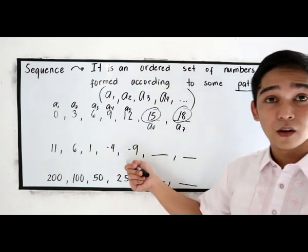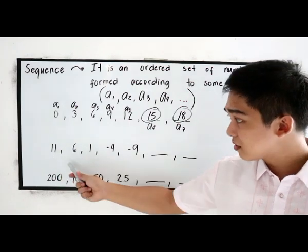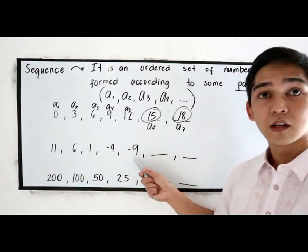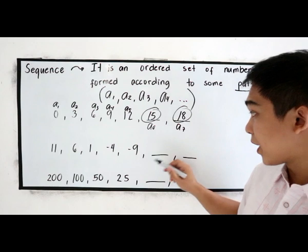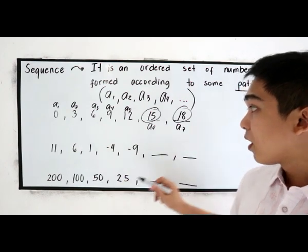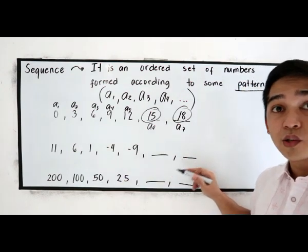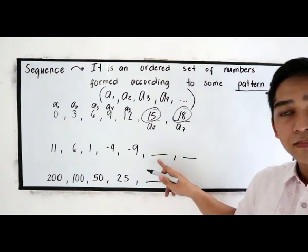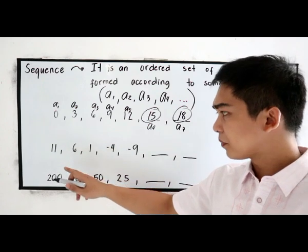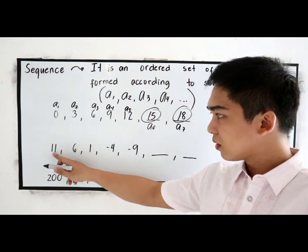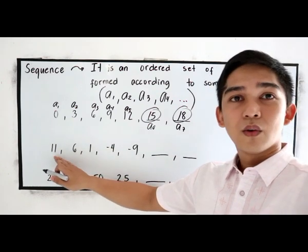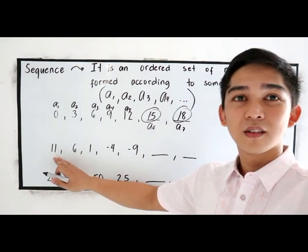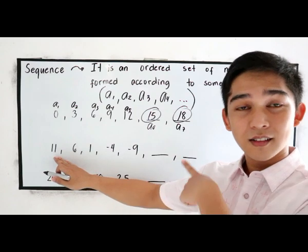Another example. 11, 6, 1, negative 4, negative 9. What will be our next term? And next to it. So our next term is, take a look at the pattern. We subtract 5 to get the succeeding term.